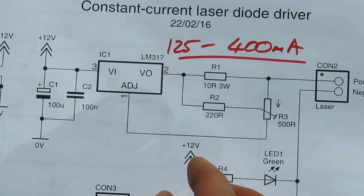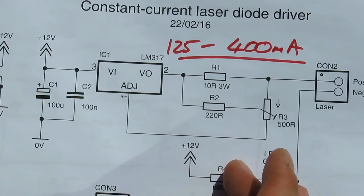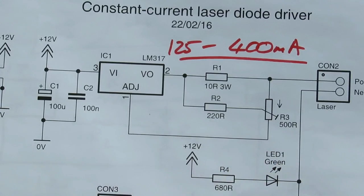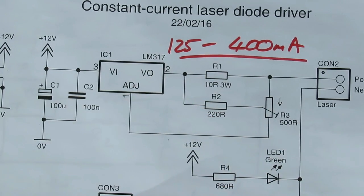This is designed for a 300 milliwatt laser diode, which normally operates at 300 milliamps, so the adjustment range is ideal for that.